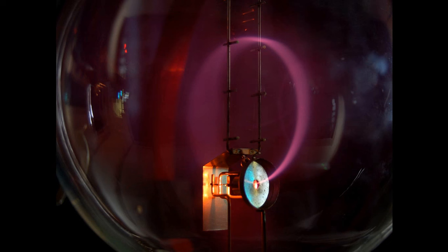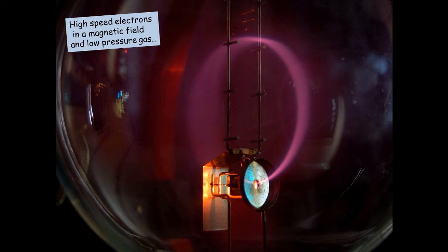And there's a magnetic field, although you can't see the magnets around the glass sphere. There's a magnetic field, and that's making the electrons curve upwards and around. So high speed electrons in a magnetic field and a low pressure gas.